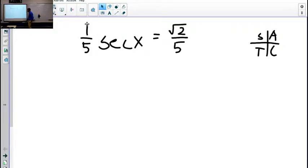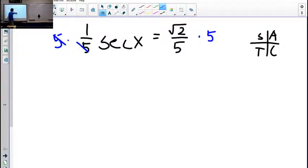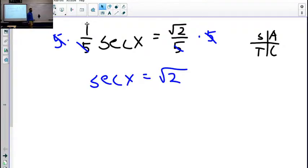So first thing we want to do, get the secant by itself. How are we going to do that? Multiply by what? By 5. On both sides. Or divide by 1 fifth, which means the same thing. These cancel. So do these.